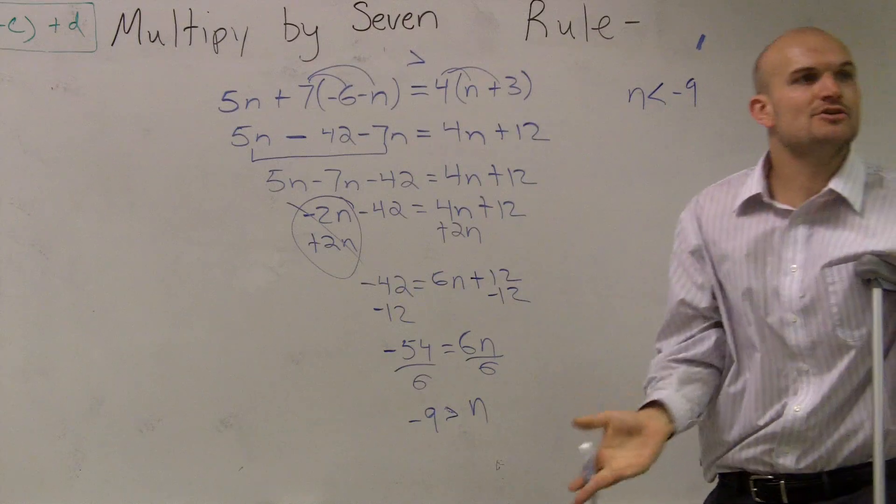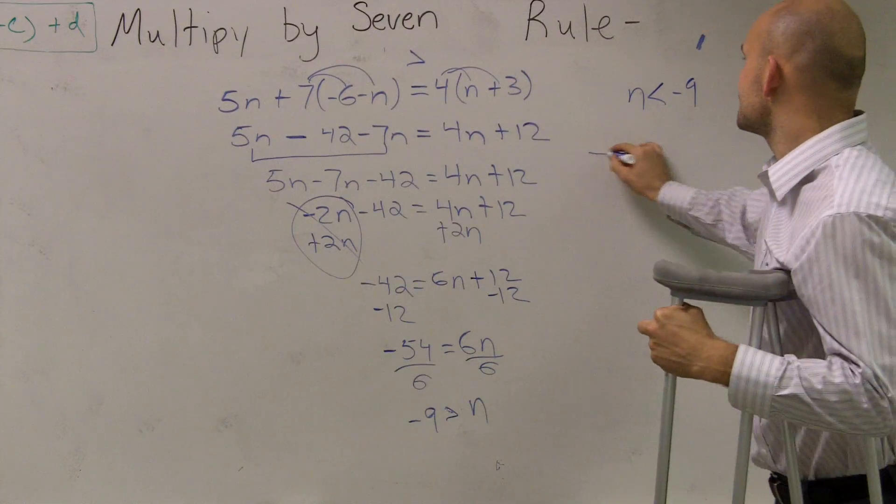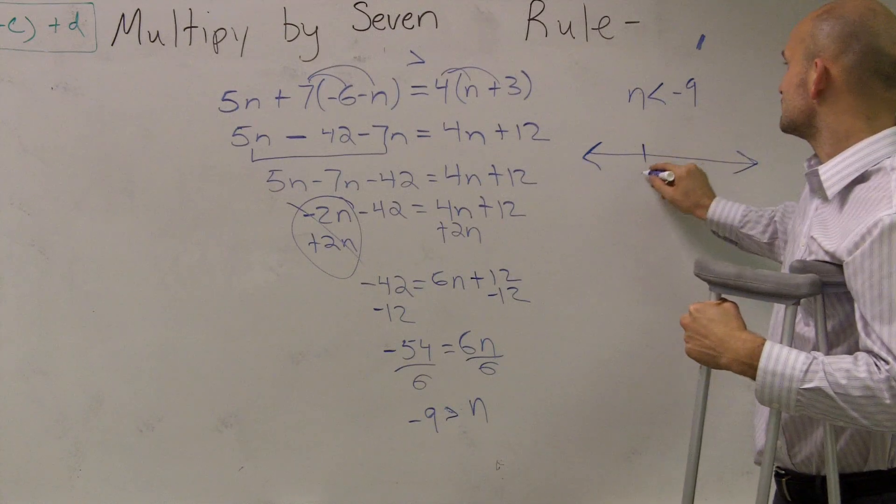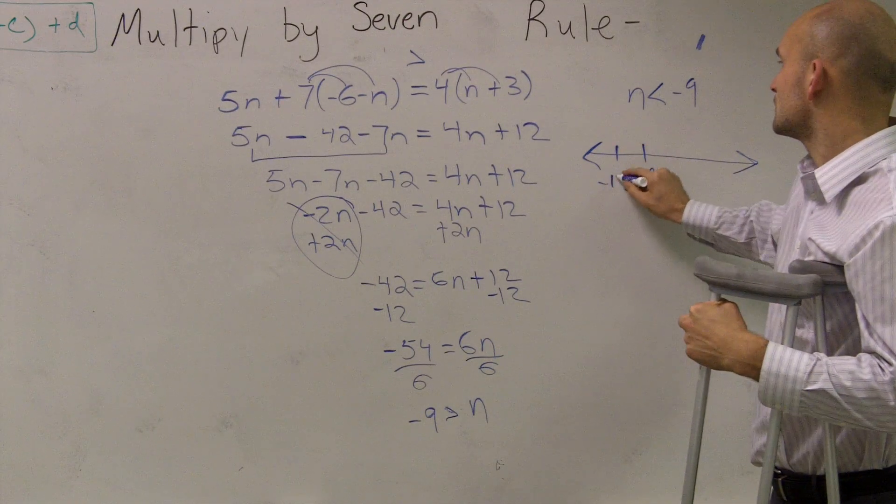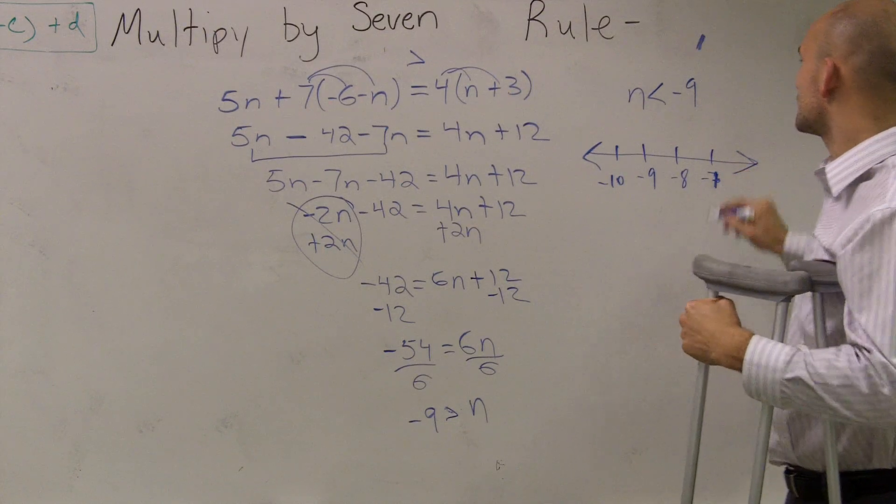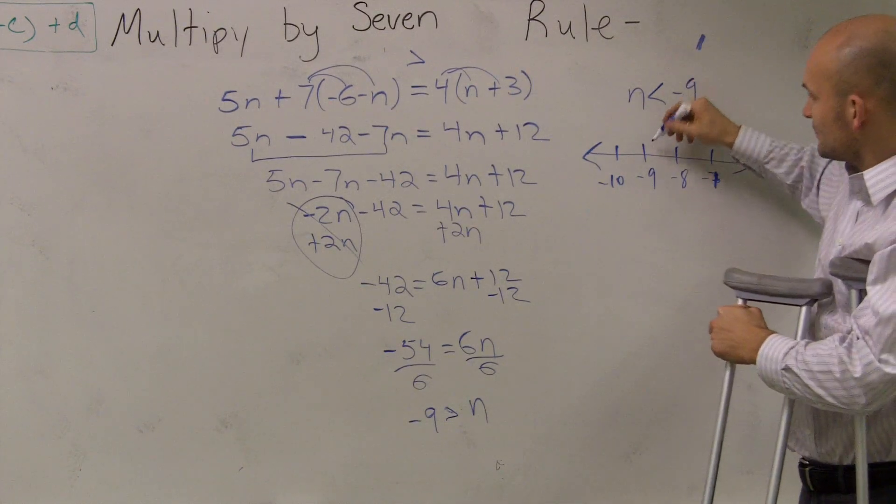Alright? Now, you guys can do test points, but for this example, I'm just going to kind of do the shortcut. So I make my point at negative 9. Negative 10. Negative 8. Negative 7. Alright? We make a point at negative 9.